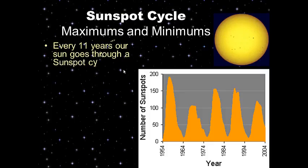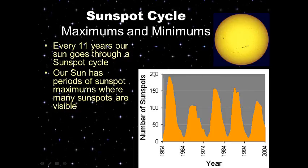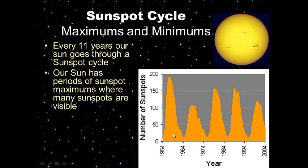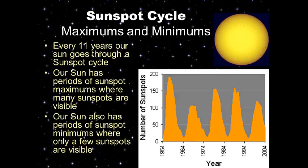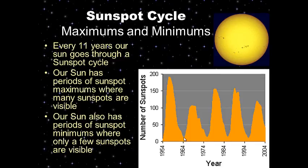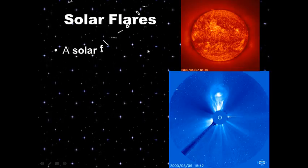Sunspots go through an 11-year cycle. Our Sun has periods of sunspot maximums, where many sunspots are visible — for example, nearly 200 sunspots were observed around 1957. Then the Sun has periods of sunspot minimums, where only a few sunspots are visible. During minimums, like 1964, only about 20 sunspots might be seen in the whole year compared to almost 200 at maximum.